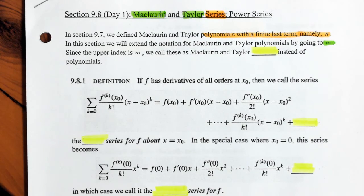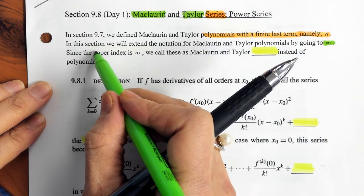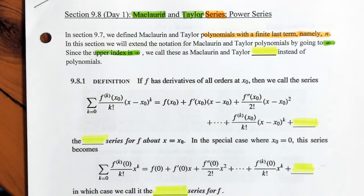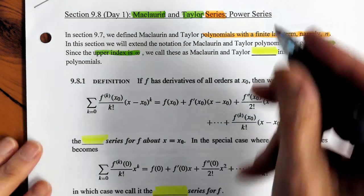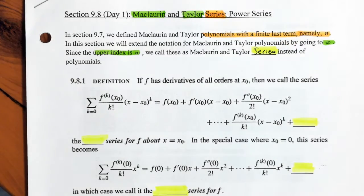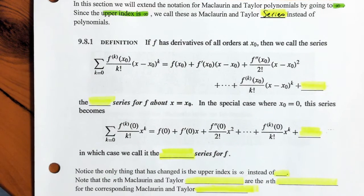It's a very slight difference: instead of having an upper index of n, it'll be an upper index of infinity. So now instead of calling them Maclaurin and Taylor polynomials, we call them Maclaurin and Taylor series.